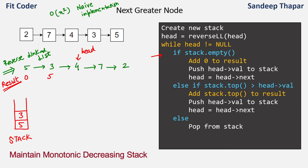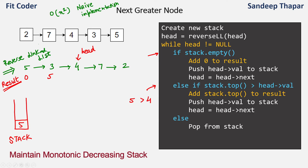In the next iteration, stack is not empty. We check if stack top 3 is greater than head value 4 — this is not true. So we come to the else part and pop 3 from the stack, since it is less than 4 and therefore not useful. We do not increment the head pointer. In the next iteration, stack top is 5, which is greater than head value 4 — this is true. So for value 4, the result is 5. We push 4 onto the stack and move head to the next node, which is 7.